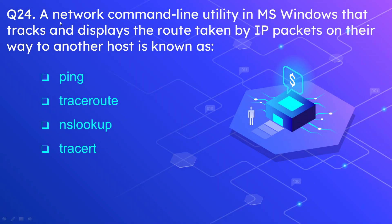Question number twenty-four: a network command line utility in Microsoft Windows that tracks and displays the route taken by IP packets on their way to another host is known as? The options are ping, traceroute, nslookup, and tracert. The correct answer is tracert. In Windows it is tracert, while in some Linux and Unix machines this command is traceroute.